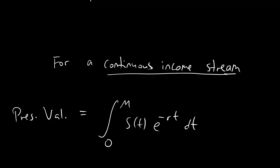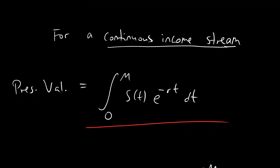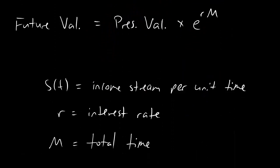If you are ever given a problem that talks about a continuous income stream, you are going to be using this formula — and also the one right beneath it. For a continuous income stream, there is this formula for present value. The E is your usual E; R, as always, is the interest rate. T is a variable that stays as T, because you're plugging all of this into an integral, so you just leave T as T. The only things you need to plug in are R, S of T, and M.